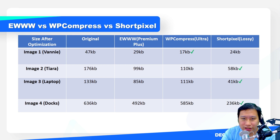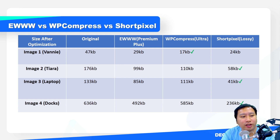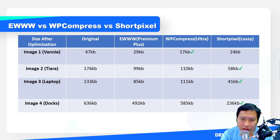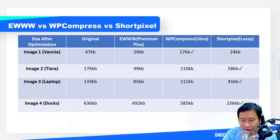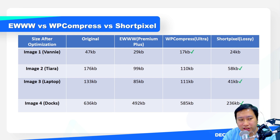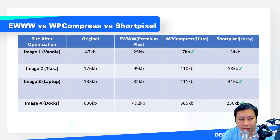In terms of file size after optimization, the first image is a picture of Vanessa from AppSumo. The original image is about 47 KB. Ewww's premium plus optimization brings it down to 29 KB — a savings of 18 KB. WP Compress is the winner here at 17 KB, and Short Pixel gives us about 24 KB.